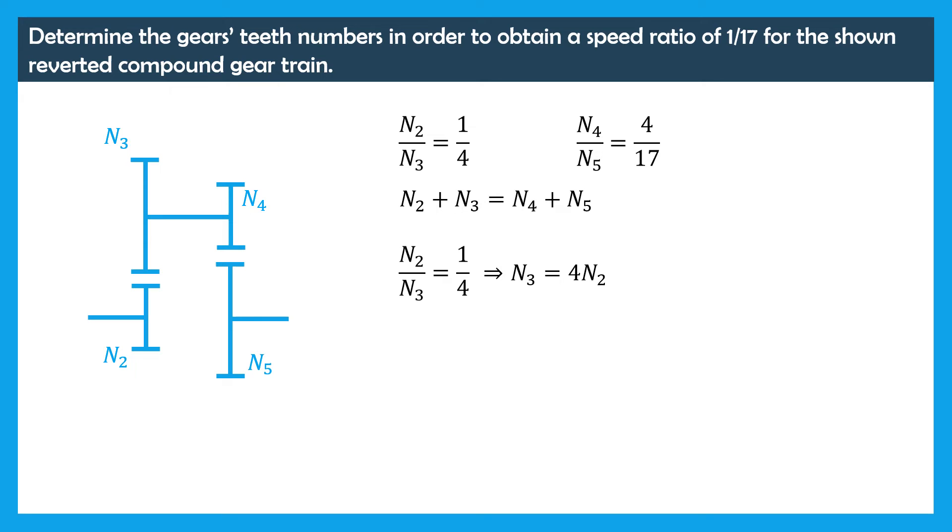The second equation writes N4 over N5 is equal to 4 over 17, hence 17N4 is equal to 4N5.